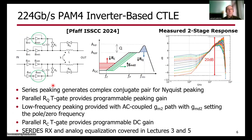Moving on to the receiver side, in the front end we generally implement continuous-time linear equalization, such as the 224 gigabit per second PAM4 inverter-based front end shown here. This design effectively implements a high-pass filter function up to the Nyquist frequency using series inductive peaking that generates a complex conjugate pair for high-frequency Nyquist peaking, programmed with a parallel RQ transmission gate to adjust peaking gain. Low-frequency peaking is provided by an AC-coupled GM2 path, where a diode-connected load adjusts the pole-zero frequency, and a parallel RC transmission gate provides programmable DC gain. We're going to discuss SERDES receiver and analog equalization topics in lectures three and five.